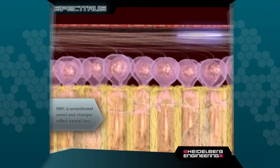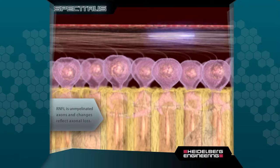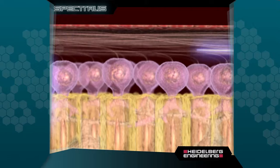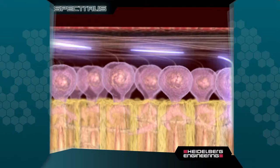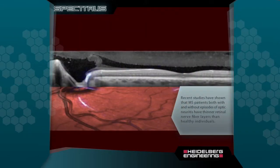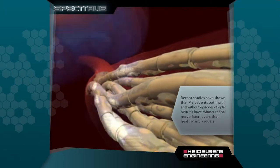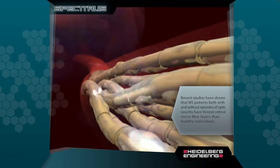RNFL is unmyelinated axons and changes reflect axonal loss. Recent studies have shown that MS patients, both with and without episodes of optic neuritis, have thinner retinal nerve fiber layers than healthy individuals.